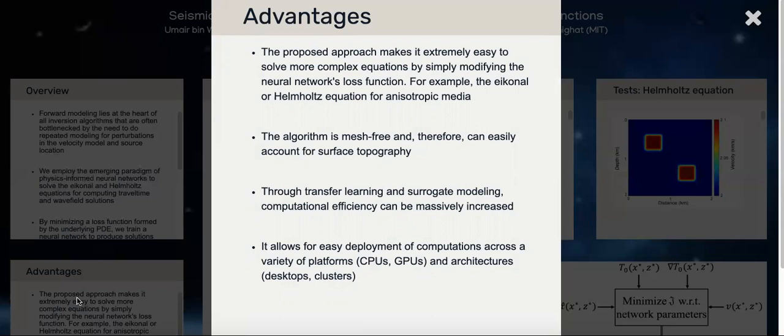The algorithm is mesh-free and therefore can easily account for surface topography or sharp pre-varying features in your velocity model. Through transfer learning and surrogate modeling, computational efficiency can be massively increased, and this provides us with a mechanism to transfer information gained in solving a problem for a particular velocity model and source location to a new problem. Moreover, it allows for easy deployment of computations across a variety of platforms, whether CPU or GPU, because the same TensorFlow code will be used since it's based on computational graphs.